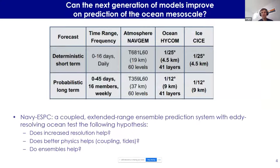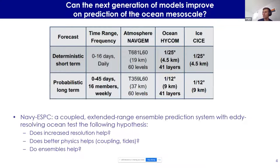With the latest coupled forecasting project at the Navy called Navy ESPC, we had a unique ability to test the hypothesis that improved resolution and improved physics can lead to improved ocean mesoscale prediction. We developed two models: a deterministic short-term model at zero to 16 days with a 19-kilometer atmosphere and about 4.5-kilometer ocean at mid-latitudes, and a probabilistic forecast at zero to 45 days with 16 members and about 9-kilometer mid-latitude ocean resolution. The deterministic model also included tides. This configuration allowed us to test whether increased resolution, better physics, and ensembles help for ocean mesoscale prediction.